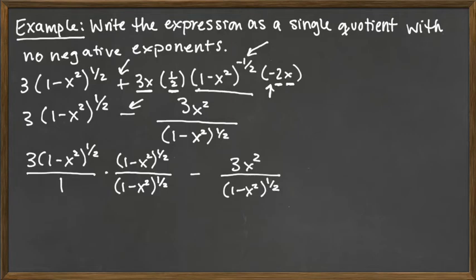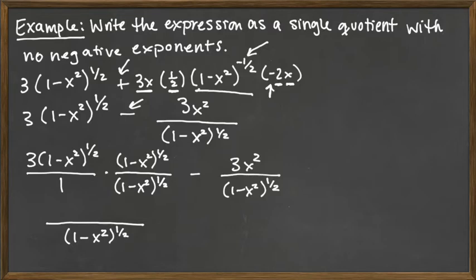We're ready to combine the fractions because multiplying two fractions means everything multiplies across the top and across the bottom. On the bottom, it's just 1 times 1 minus x squared to the 1 half — putting the correct denominator in. On the top, we've got a factor of 3, and then 1 minus x squared to the 1 half appears twice — same base raised to different exponents being multiplied, so we add the exponents: 1 half plus 1 half equals 1. That gives us 1 minus x squared to the first power.